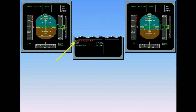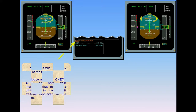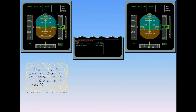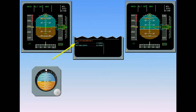On the engine warning display, read the title of the failure notice. Also check attitude on both PFDs, indicating that there is a difference in the aircraft attitude displayed to the pilots. The attitude cross-check is carried out by comparing both PFDs to the standby horizon. In this example, the first officer's PFD differs from the captain's PFD and the standby horizon, and is obviously the one at fault.